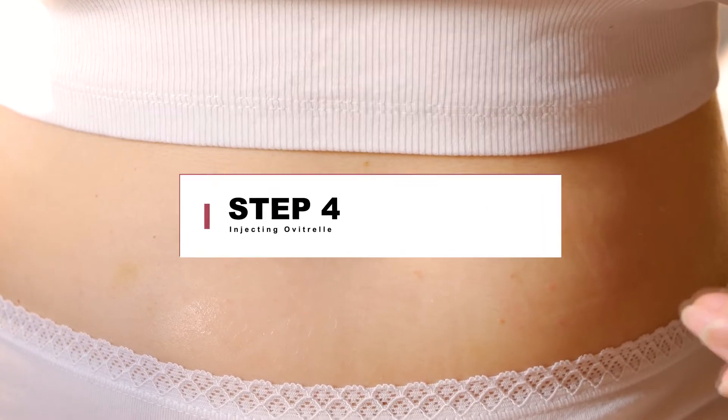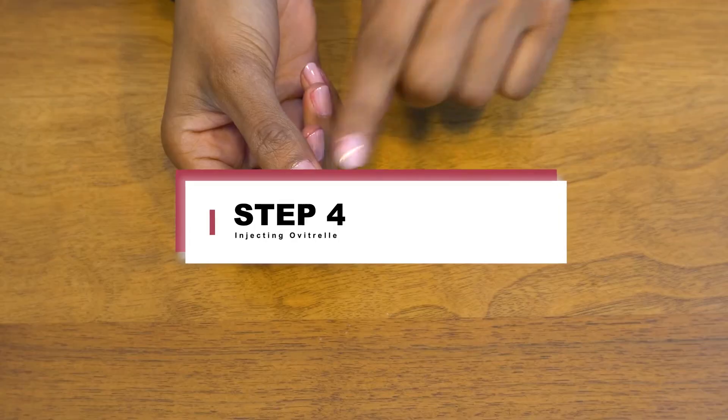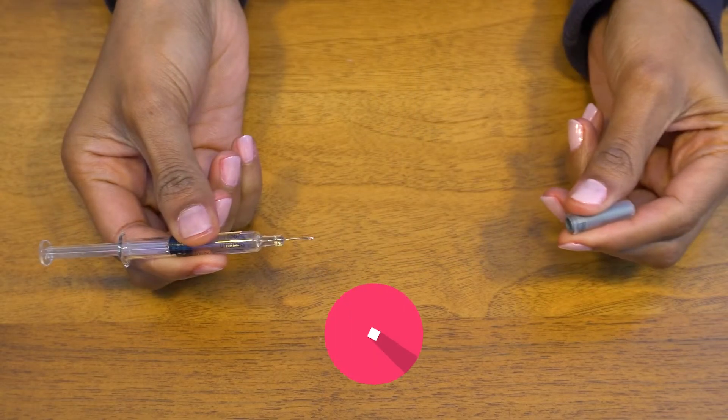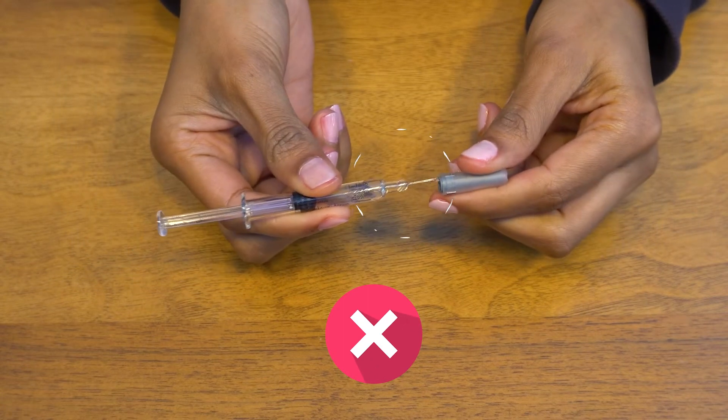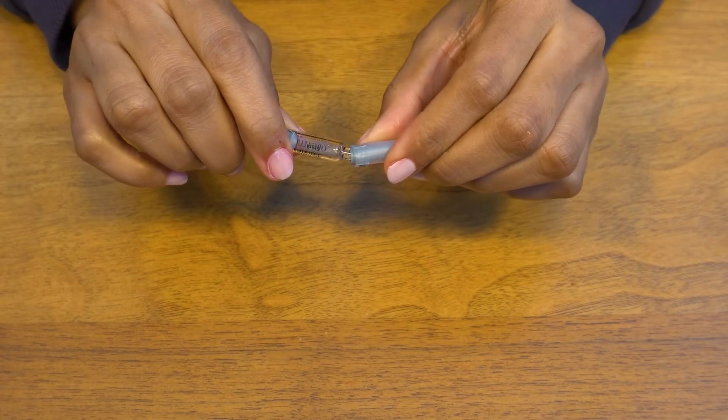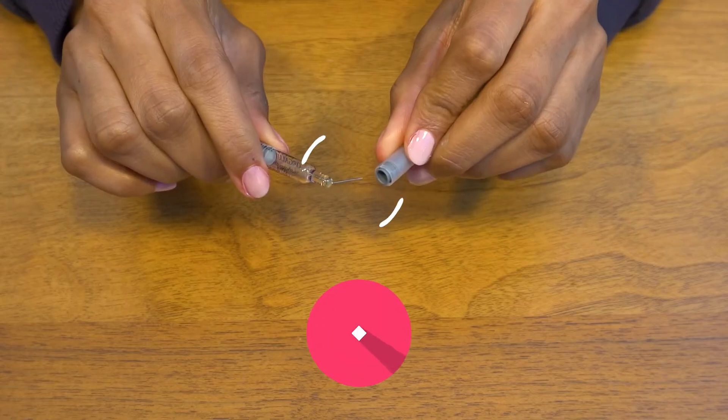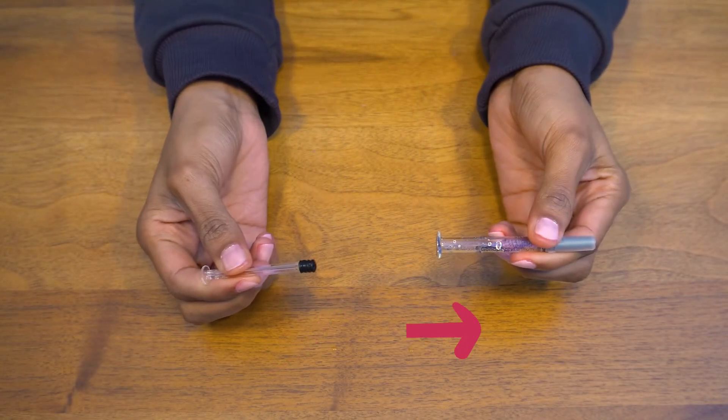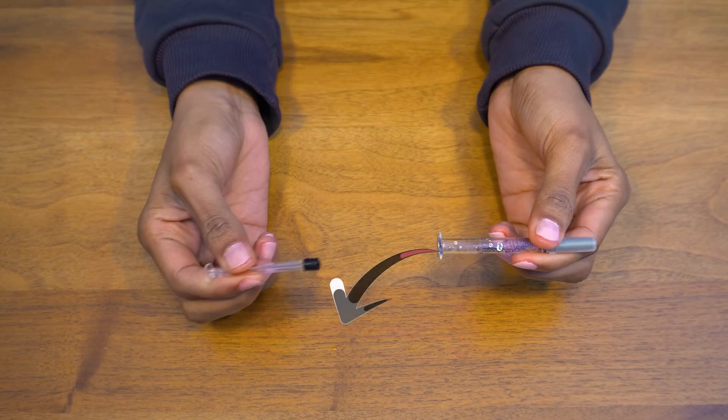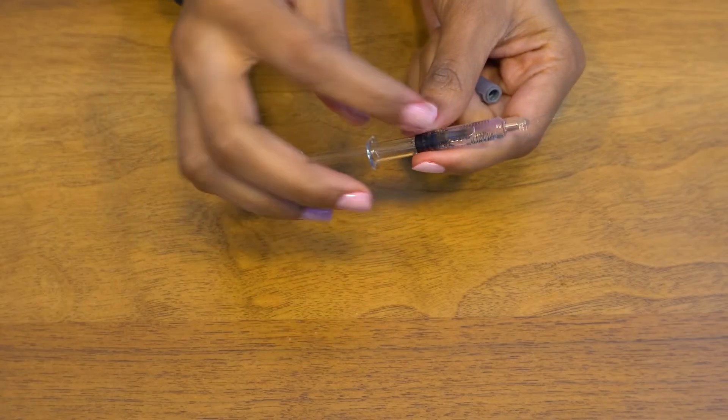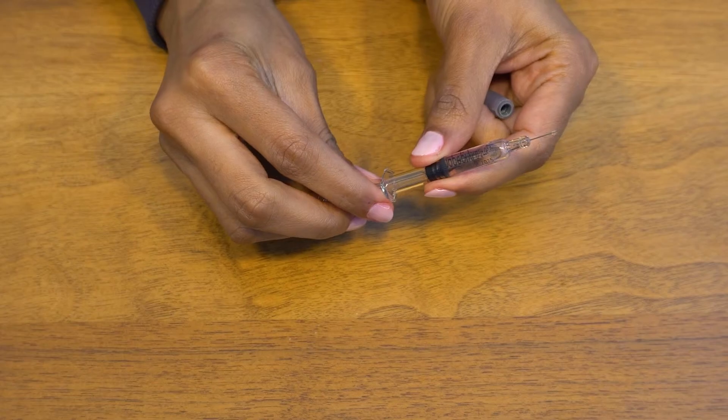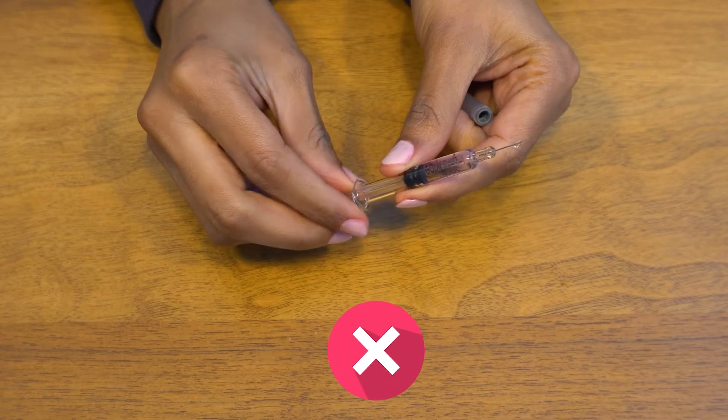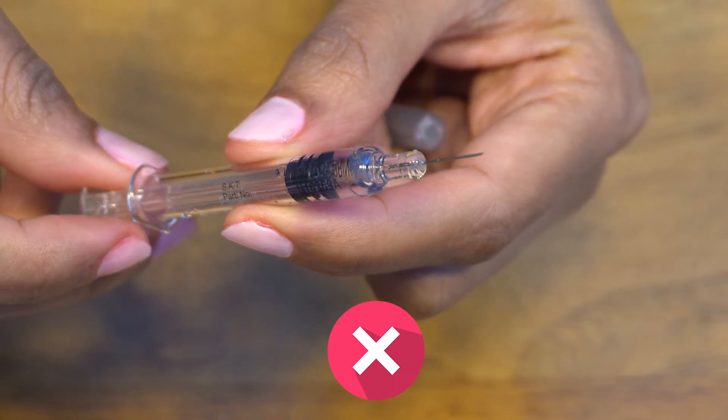Step 4: Injecting Ovitrel. Remove the needle cap from the pre-filled syringe without touching the needle. Don't bend the needle, as you may break it. Don't hold the syringe incorrectly, as it may cause you to spill the medication if pulled by mistake. Do not try to expel the air inside the syringe; a small amount of air is not detrimental, and you may waste medicine while trying to remove a tiny air bubble.